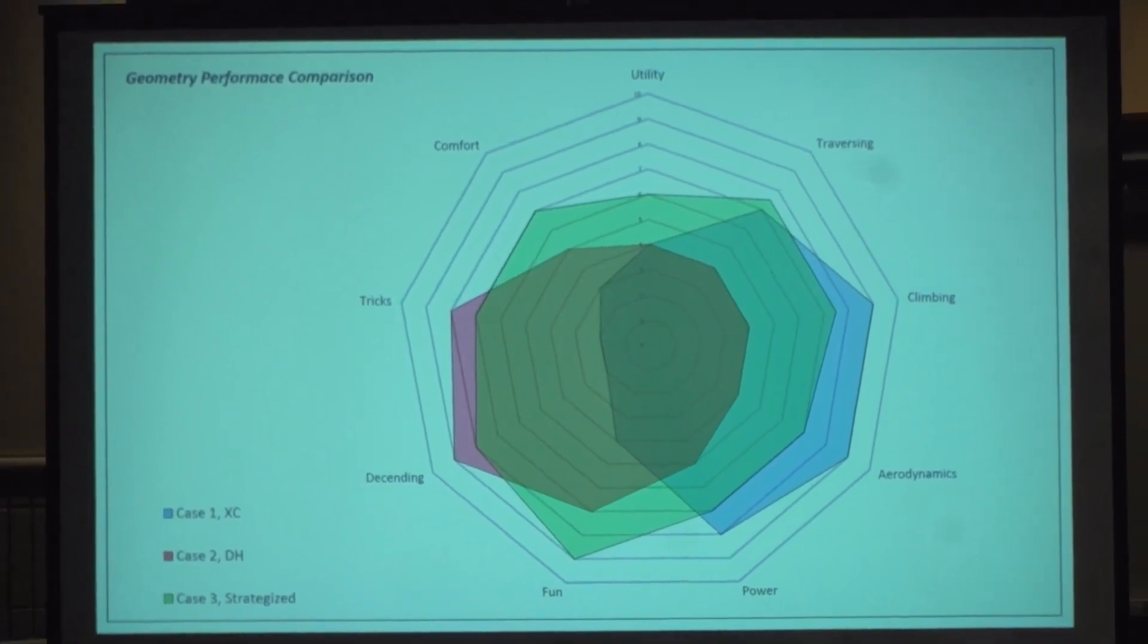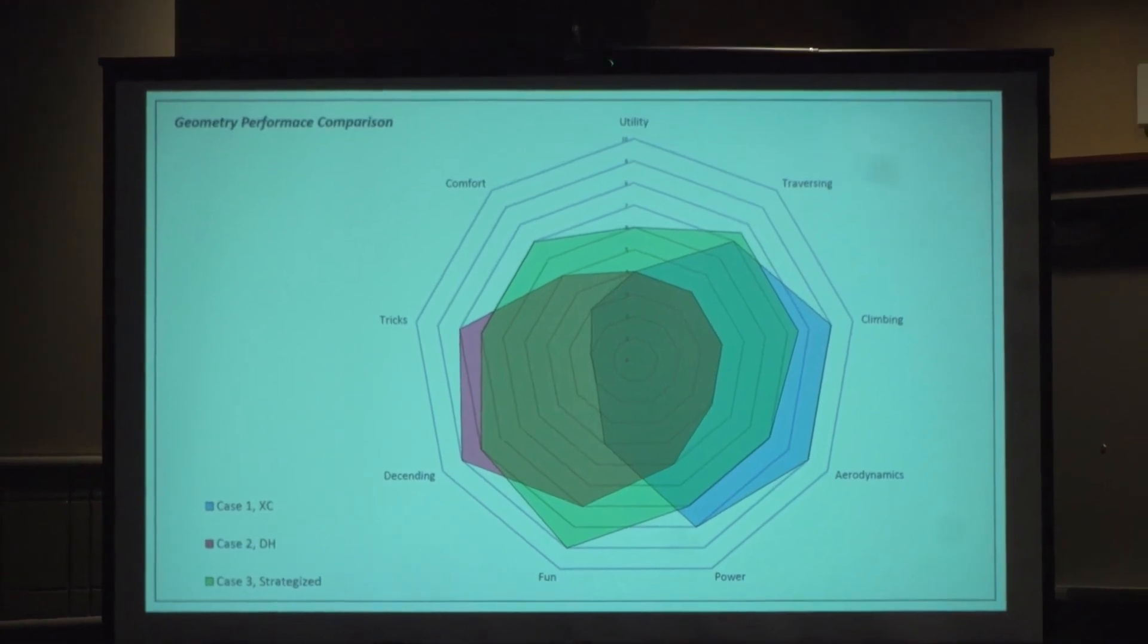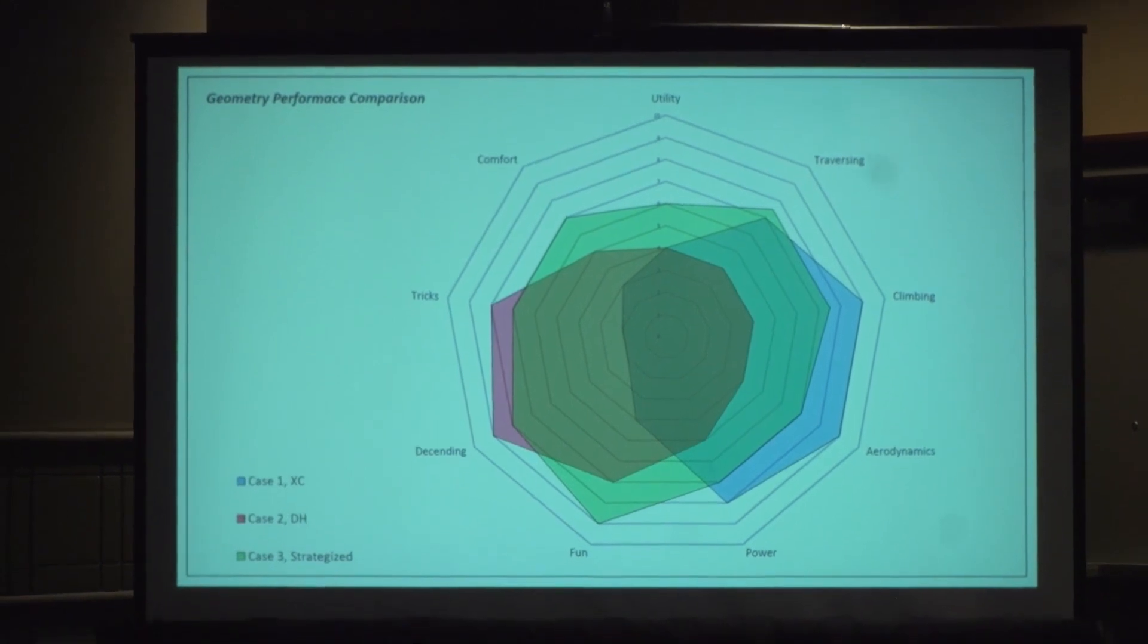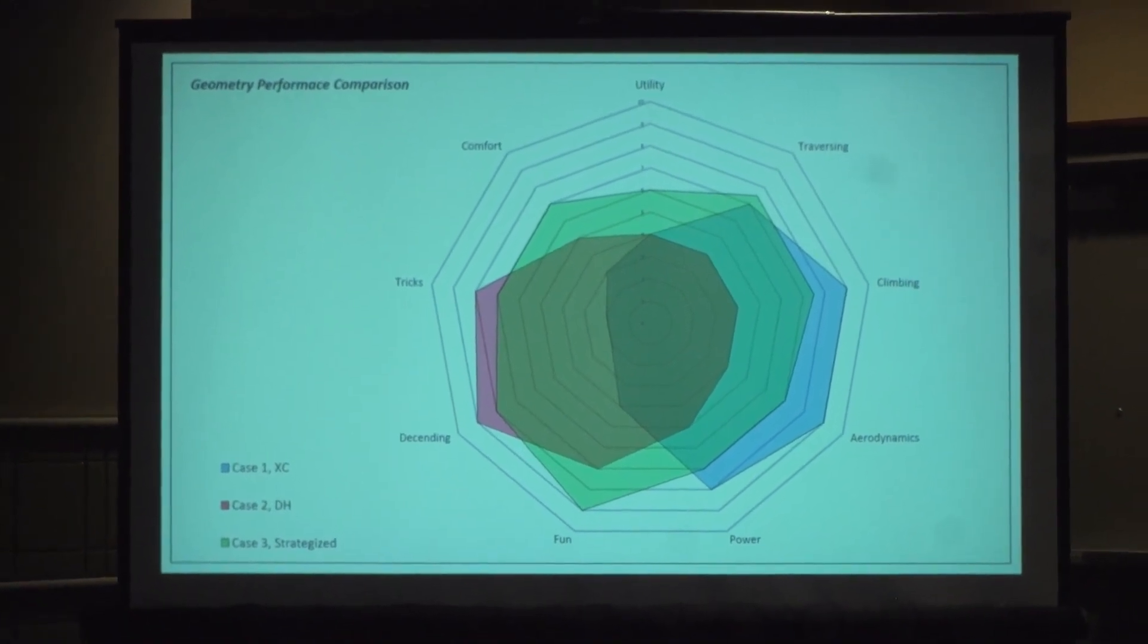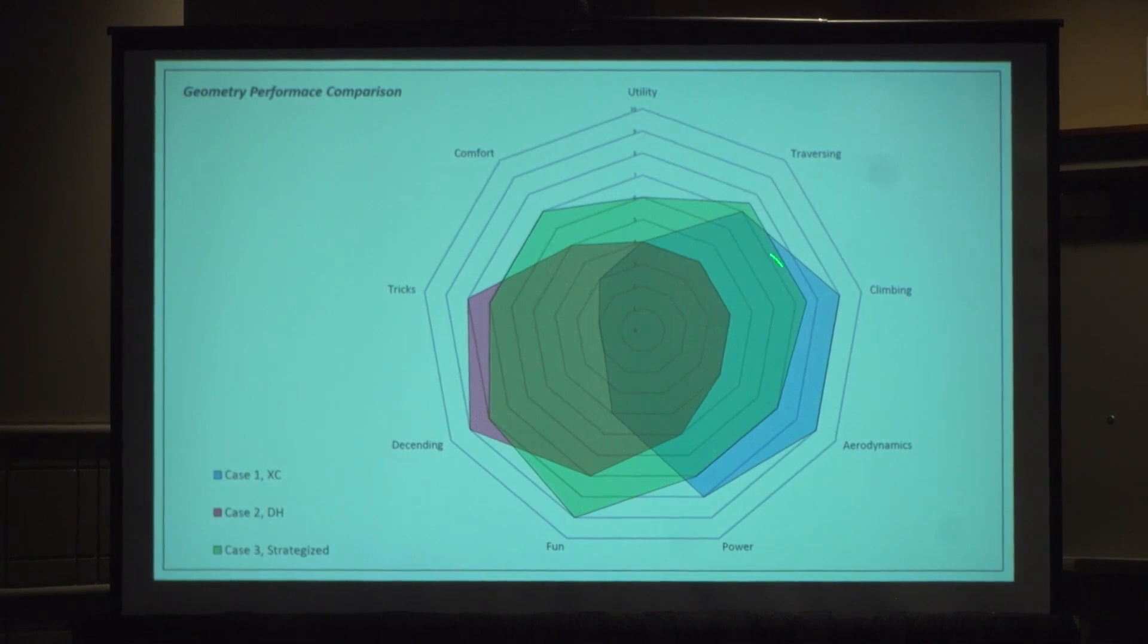But this is just a spider graph of optimization that you can think about when you're putting a bike together or building a bike or designing stuff. There's several things: utility, traversing, climbing, aerodynamics, power, fun, descending, tricks, comfort. In this case one might be an XC racer where they're over here and they're trying to narrow down in these areas for optimizing in these conditions.